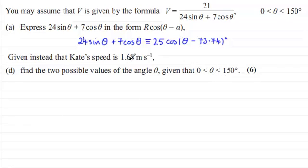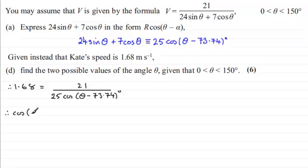So I'll substitute V equaling 1.68, so we've got therefore 1.68 equals the 21 divided by our denominator now, which I'm going to write as 25 cosine of theta minus 73.74 degrees. And if I rearrange this, multiply both sides by cosine of theta minus 73.74 and divide by 1.68, I'm going to get this result that the cosine of theta minus 73.74 degrees is equal to 21 divided by 25 times the 1.68.